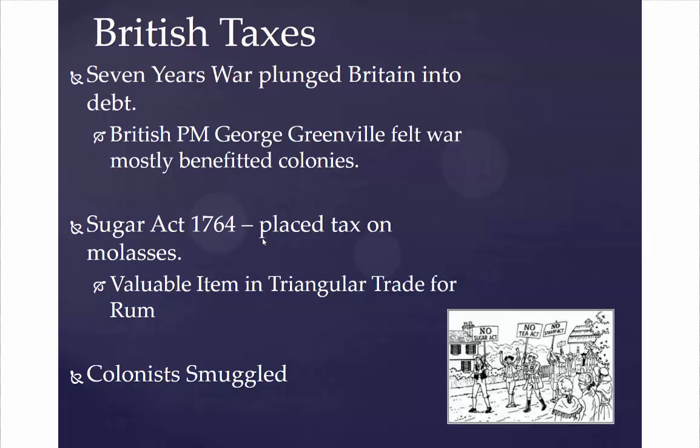The Seven Years' War — or the French and Indian War — had been very costly for the British. The British Prime Minister, George Grenville, felt the war had mostly been beneficial to the colonists, so as a way of recouping costs, they instituted the Sugar Act in 1764, placing a tax on molasses. Molasses is used to create rum, which had been a valuable trade item in the triangular trade between North America, Britain, and Africa. As a result, colonists began smuggling large quantities of these taxed goods.